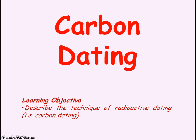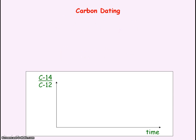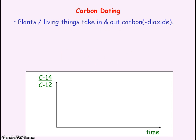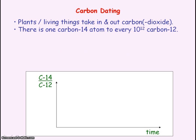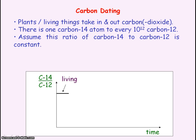We're going to be looking at Carbon Dating. Carbon Dating is a method to determine the age of artifacts using carbon-14. The process relies on plants and living things taking carbon dioxide, and in carbon there's one carbon-14 atom for every 10 to the 12th carbon-12. We assume this ratio of carbon-14 to carbon-12 is constant in living things.